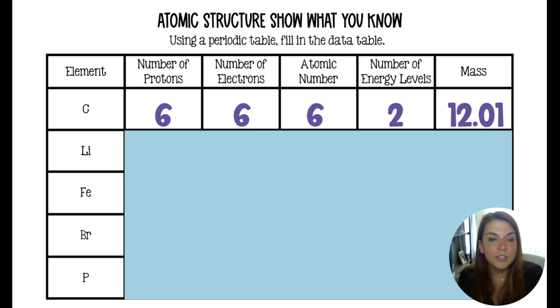All right, using this table, you should determine the number of protons, electrons, the atomic number, and the number of energy levels for lithium and iron. Those are the two that I'm going to give you in addition to the one for carbon.